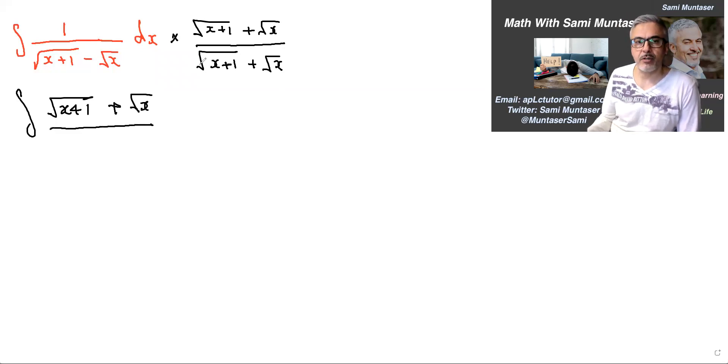The bottom, we're just going to FOIL it. This times this is x plus 1. The middle stuff is going to cancel, so multiplying the last part gives me minus x, and we have dx, which works out.